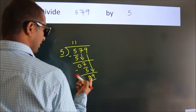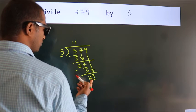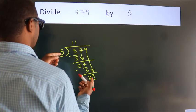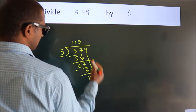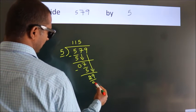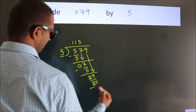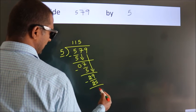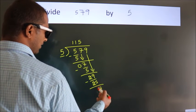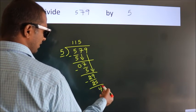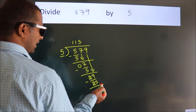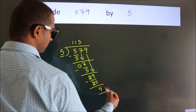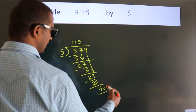So we have 29. A number close to 29 in the 5 table is 5 fives — 25. Now we subtract and we get 4. After this, there are no more numbers to bring down, so we stop here. This is our remainder.